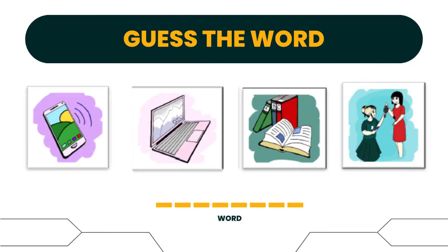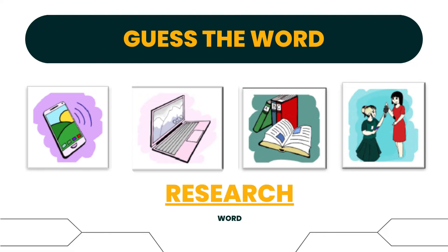In the first picture, you can see a phone. In the second, you can also find a laptop. In the third, you will see books. In the fourth, you can see friends sharing. So, what do you think is the word? If your answer is research, then you are correct. Good job, students!